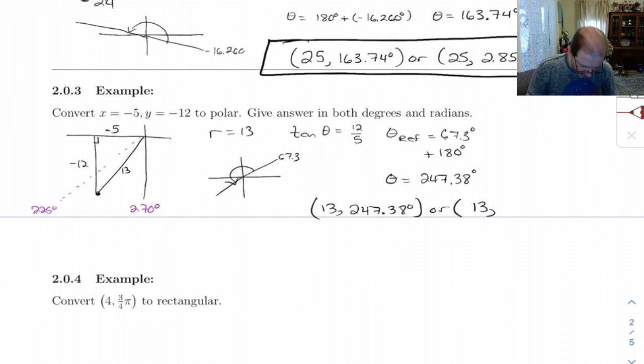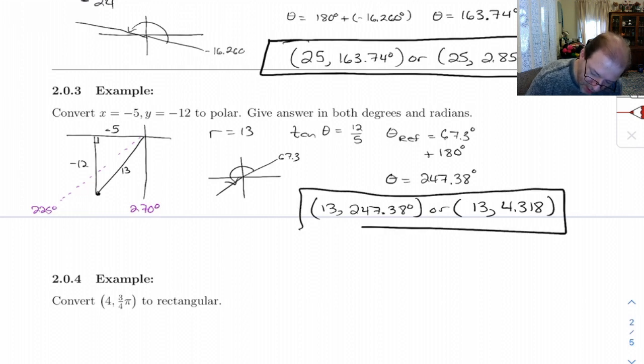And let's see, that 247 to convert to radians, multiply by pi, divided by 180, gives me 4.318 radians. So those are the two ways we could write that answer.